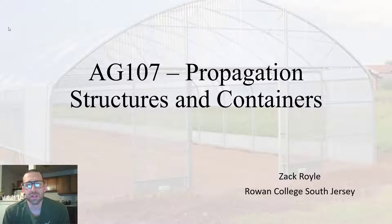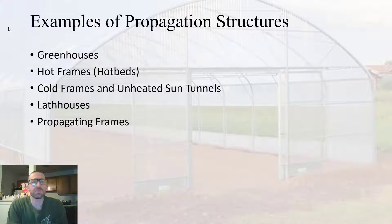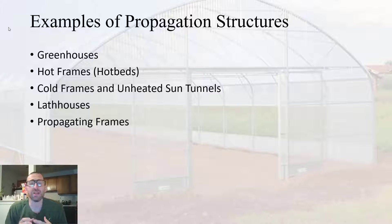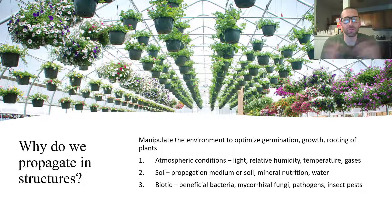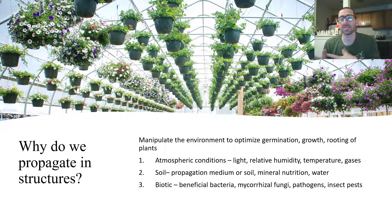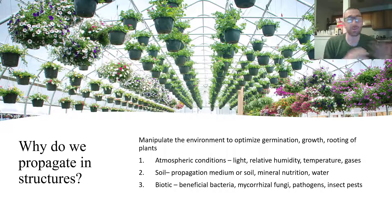In this lecture we are going to be looking at propagation structures and containers. Some of the structures we're going to be looking at are greenhouses, hot frames or hotbeds, cold frames, lath houses, and propagating frames. Before we get into the specifics, you may be wondering why do we propagate in structures to begin with. The answer is that they allow us to manipulate environmental conditions to optimize the germination or rooting of our plants.